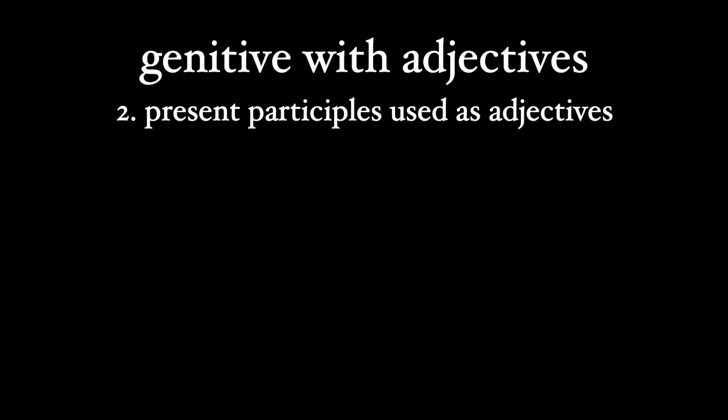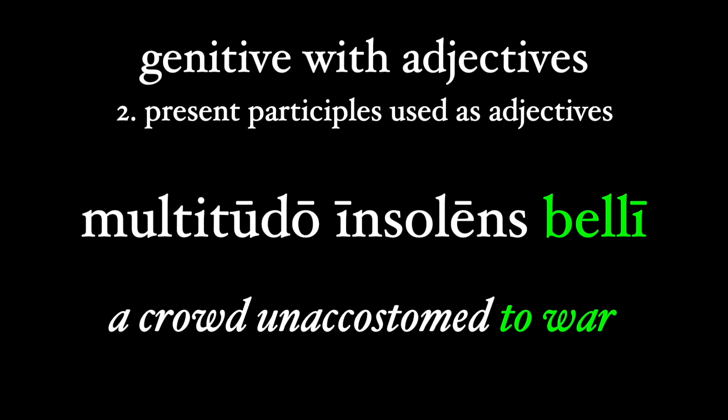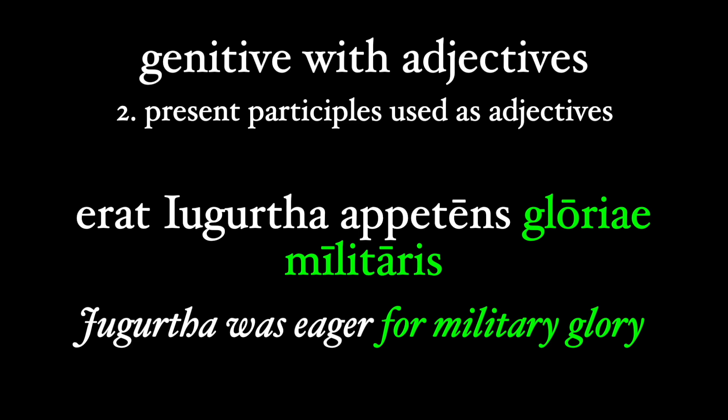The next group involves present participles used as pure adjectives and not used as participles — so this would be when the participle is showing a general circumstance rather than a specific action. From Caesar: 'multitudo insolens belli,' a crowd unaccustomed to war — 'insolens' is acting as an adjective, not showing an action, and so it takes the genitive 'belli.'